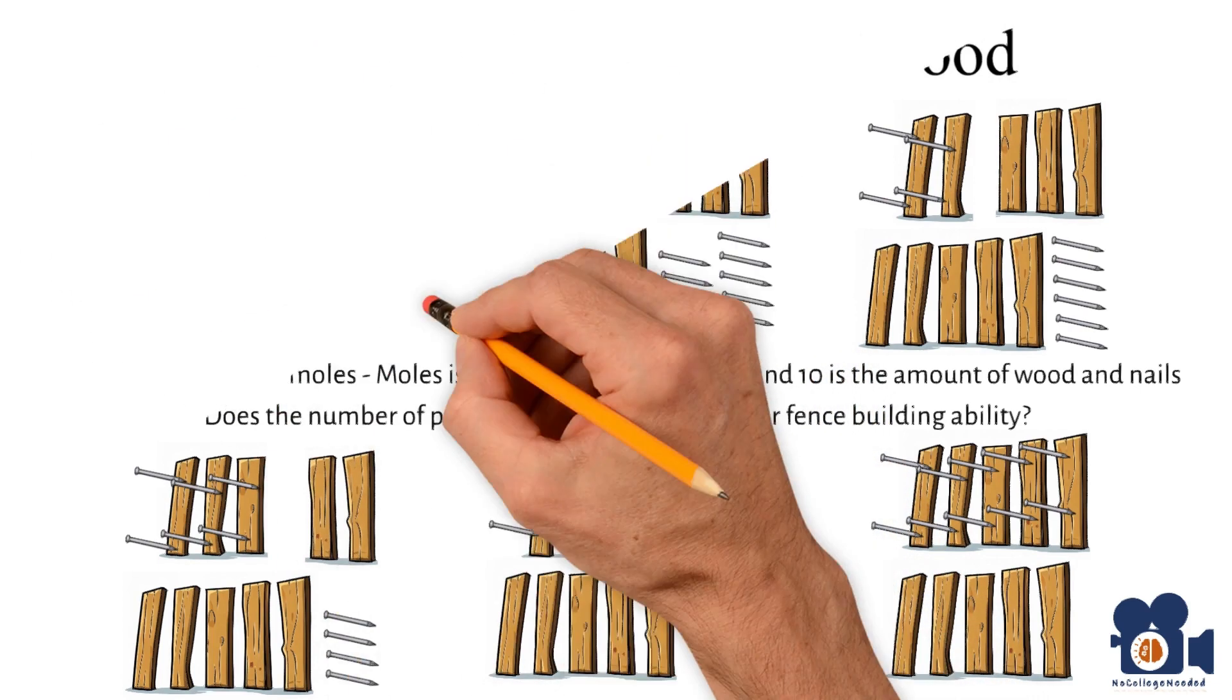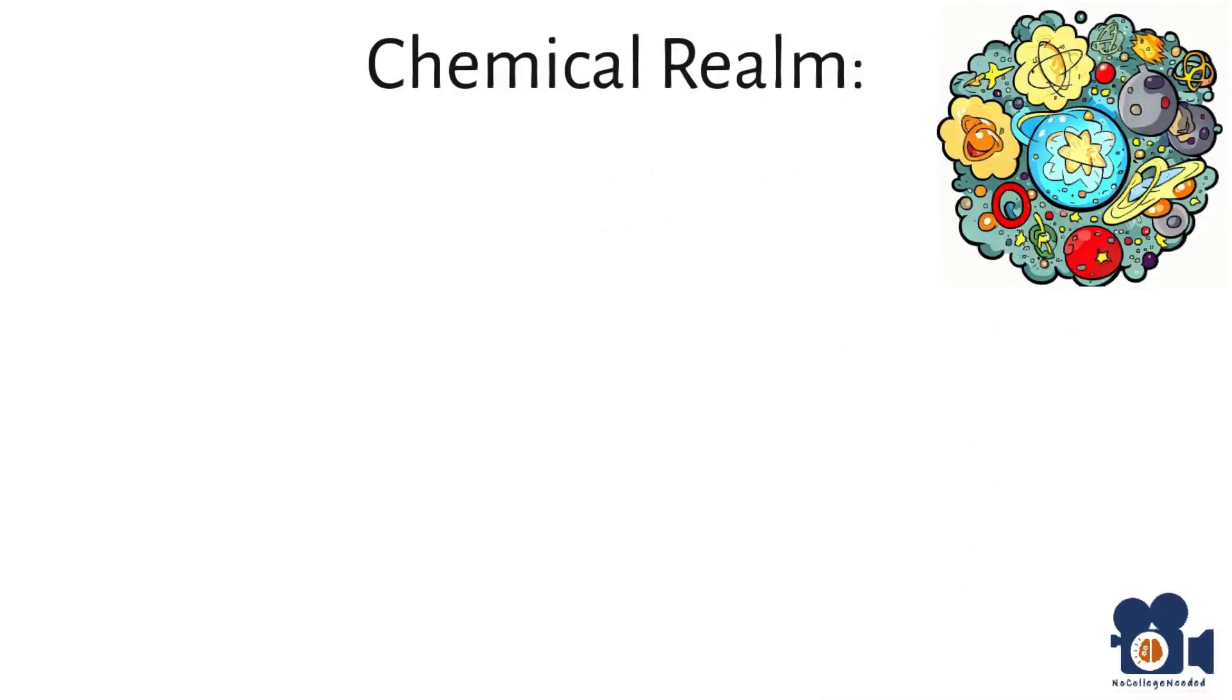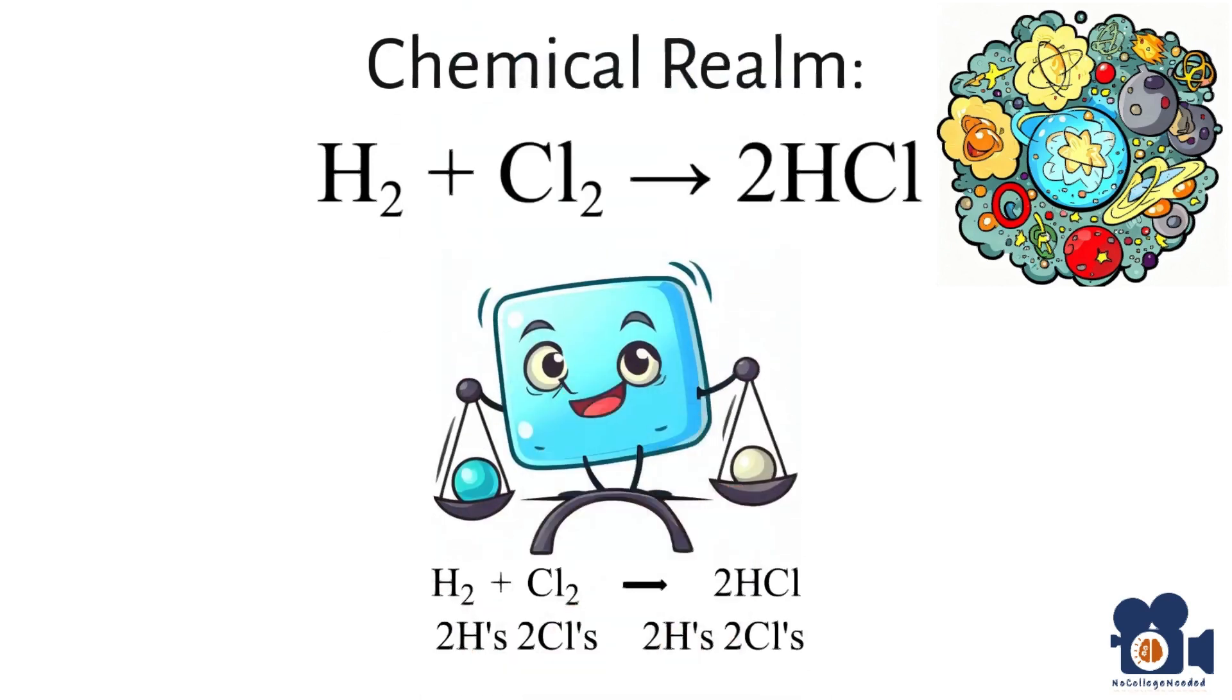Now let's take this into the chemical realm by looking at the formation of hydrochloric acid, HCl. The reaction is H₂ + Cl₂ → 2HCl. Notice that the equation is balanced since there are two hydrogen and two chlorine atoms on each side of the reaction.